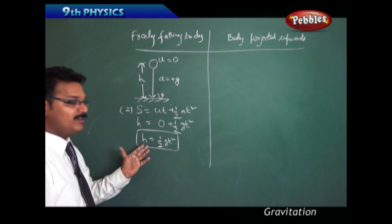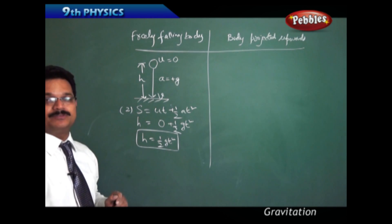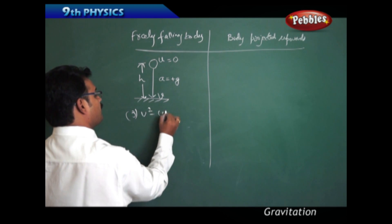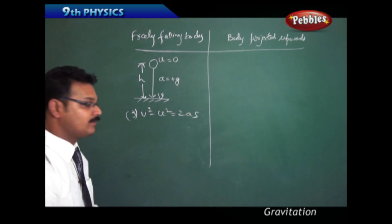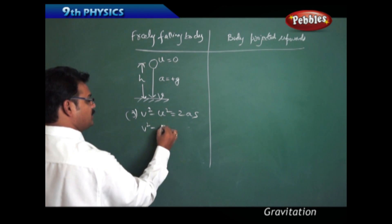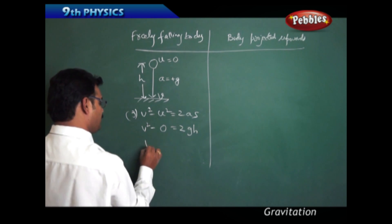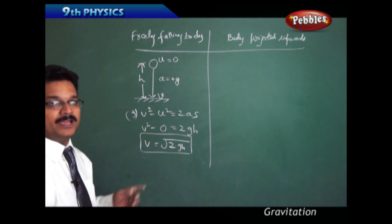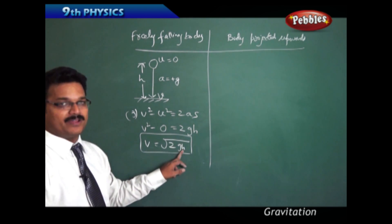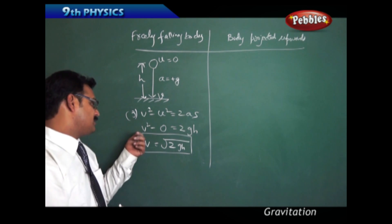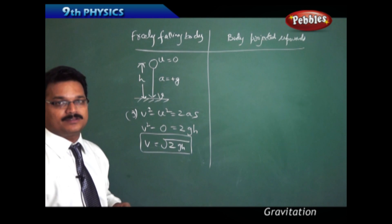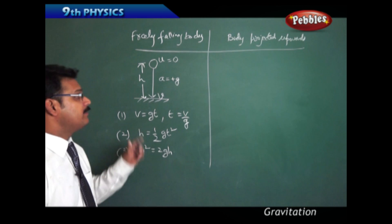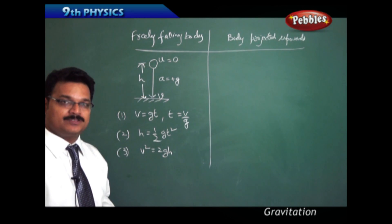Using H = ½GT², you can find the height or distance travelled by a freely falling body when time is given. Applying the third equation, V² - U² = 2AS, with U = 0 and A = G, we get V² = 2GH, therefore V = √(2GH). If you know the height travelled, you can find the velocity, and vice versa.